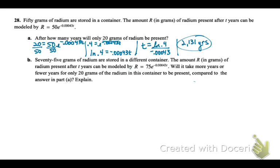75 grams of radium are stored in a different container. So the amount present after so many years can be modeled by this equation. Will it take more years or fewer years for only 20 grams of radium in this container to be present compared to part A? So let's plug 20 in in this situation. We have our same crazy decimal. Three zeros. So let's start by dividing by 75. Now sometimes when you divide like that, you won't get an exact decimal. So don't round. Just keep it in fraction form.